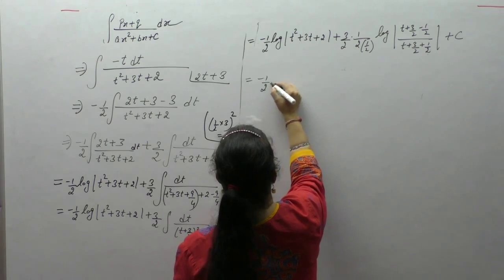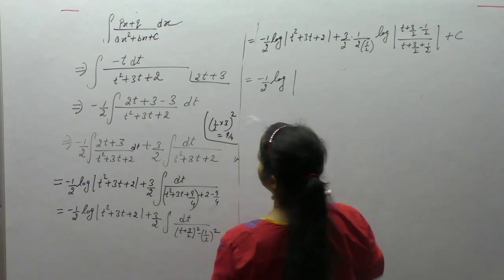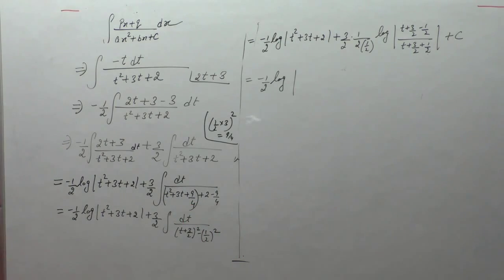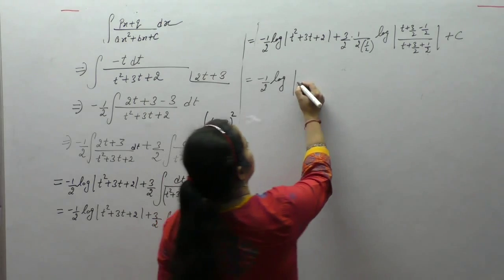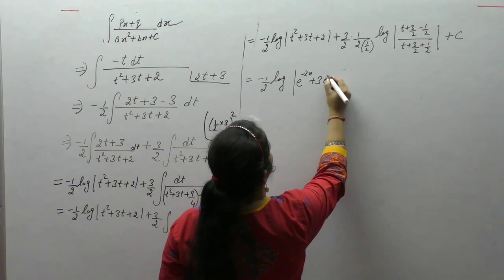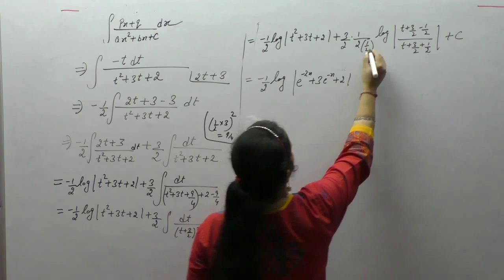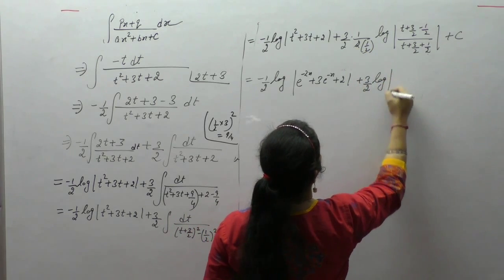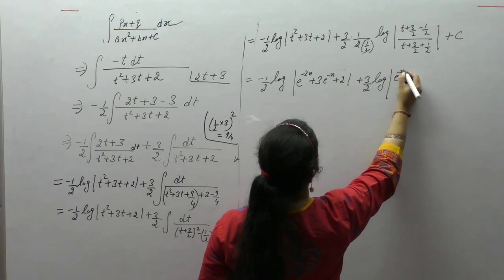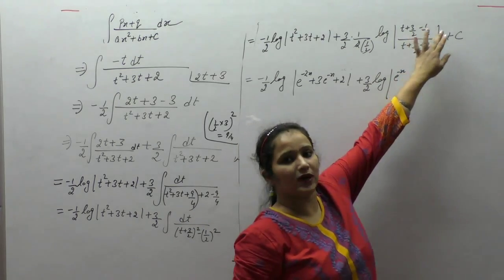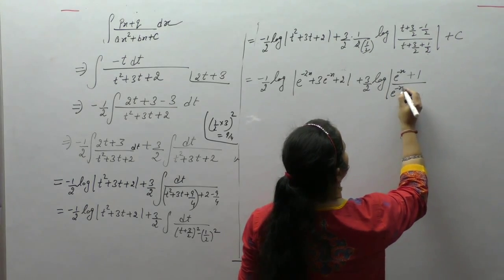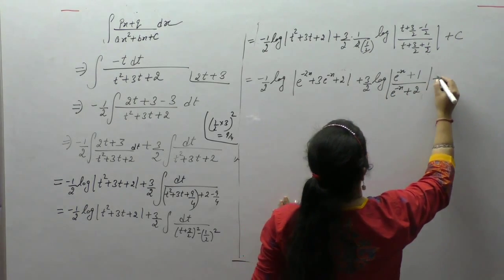Substituting back, minus 1/2 log of t where t is e^(-x): e^(-2x) plus 3 into e^(-x) plus 2. Plus 3/2 times log, where 3 minus 1 is 2, so 2 upon 2 is 1, and 3 plus 1 is 4, so 4 upon 2 is 2. This completes the first integral.